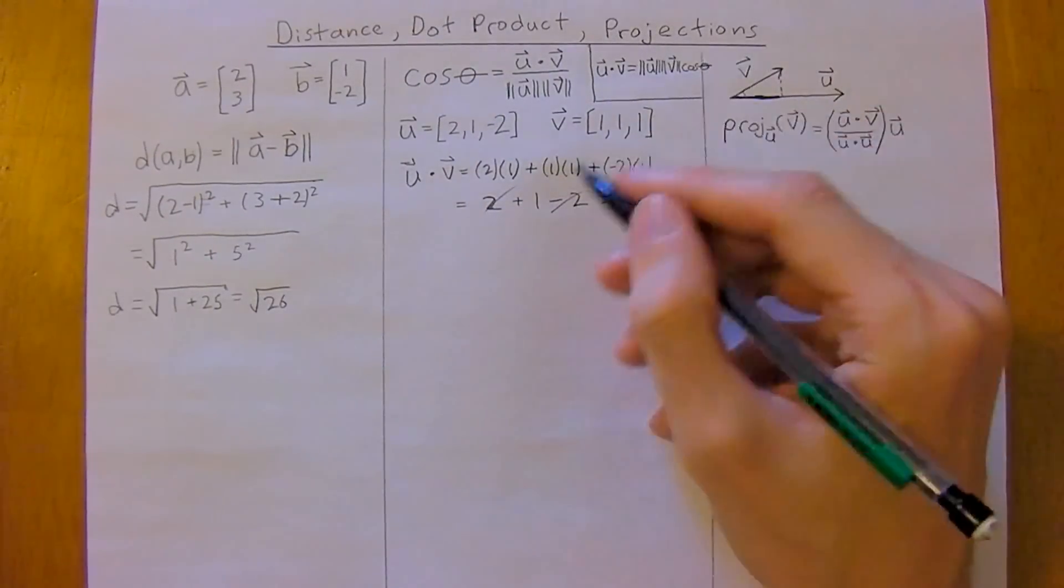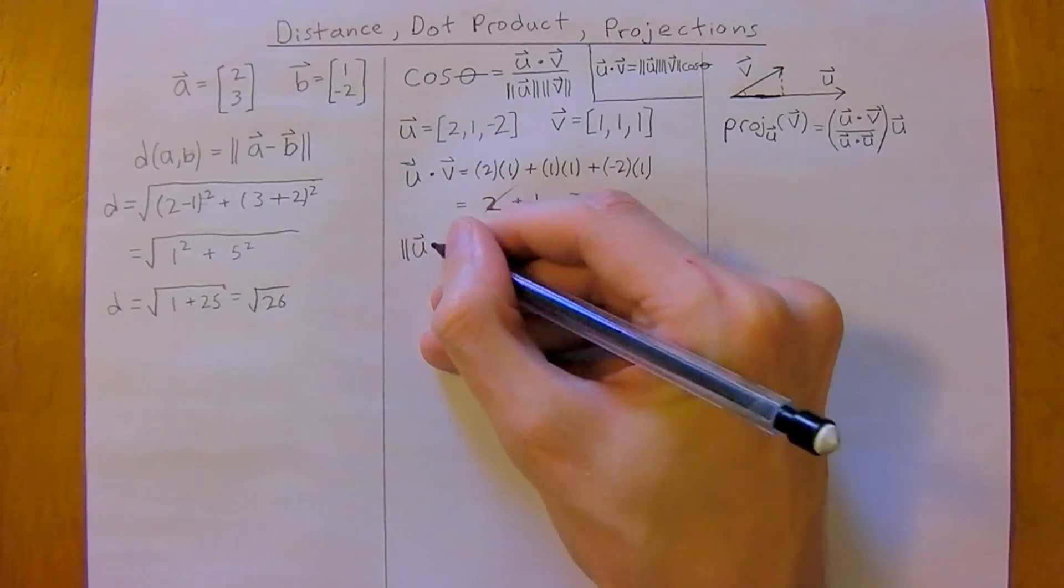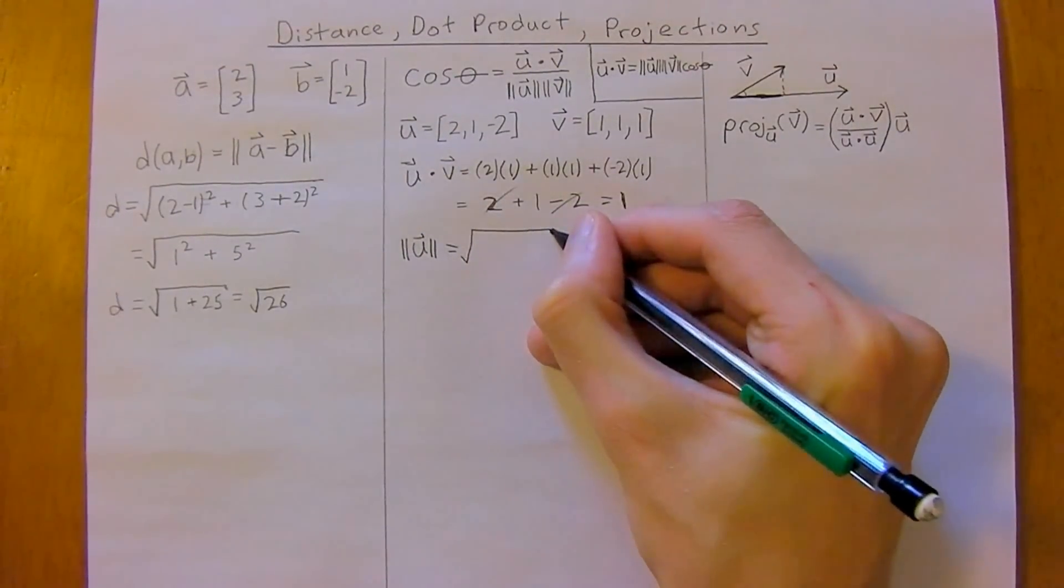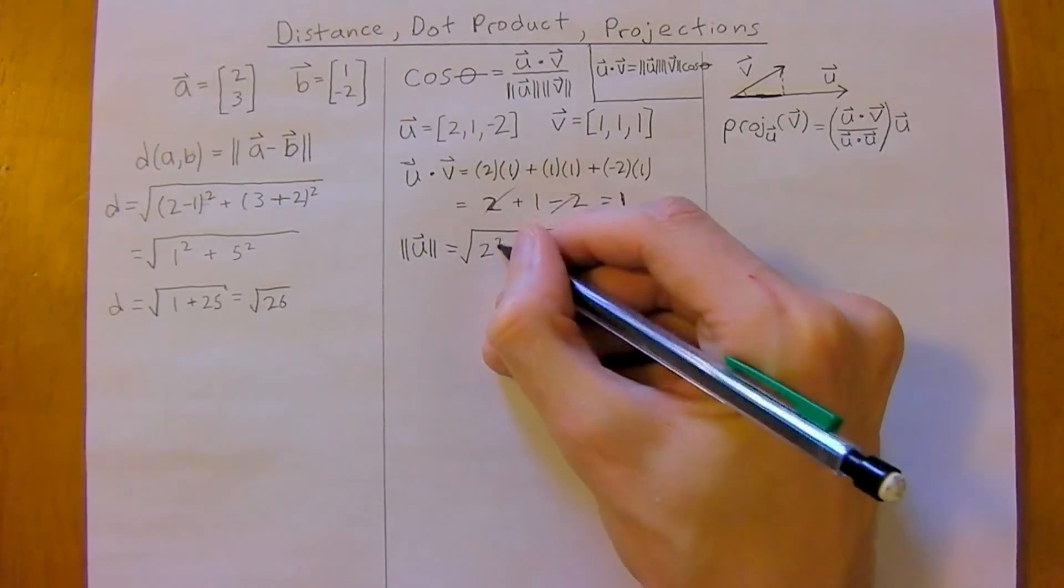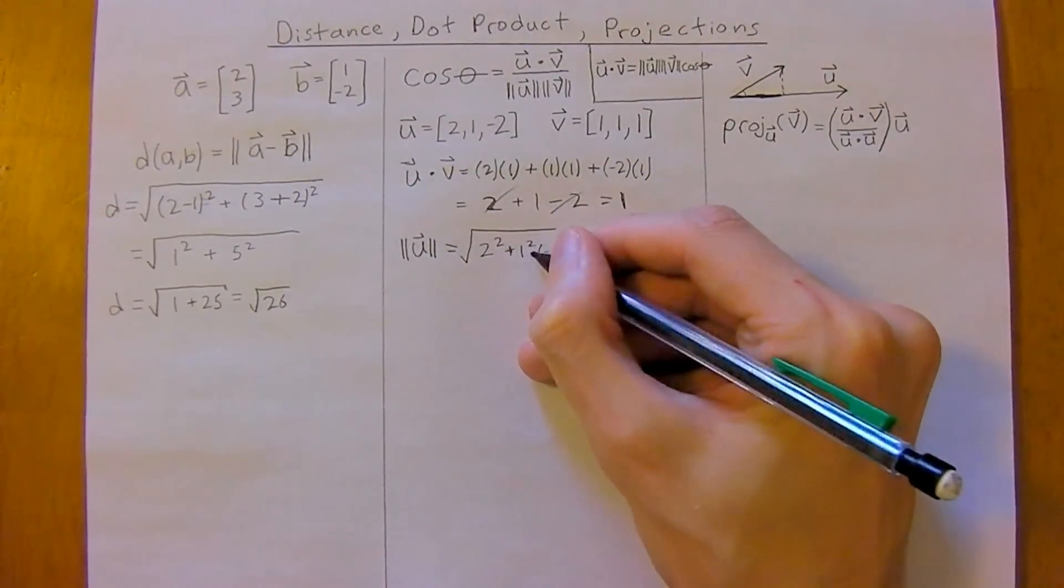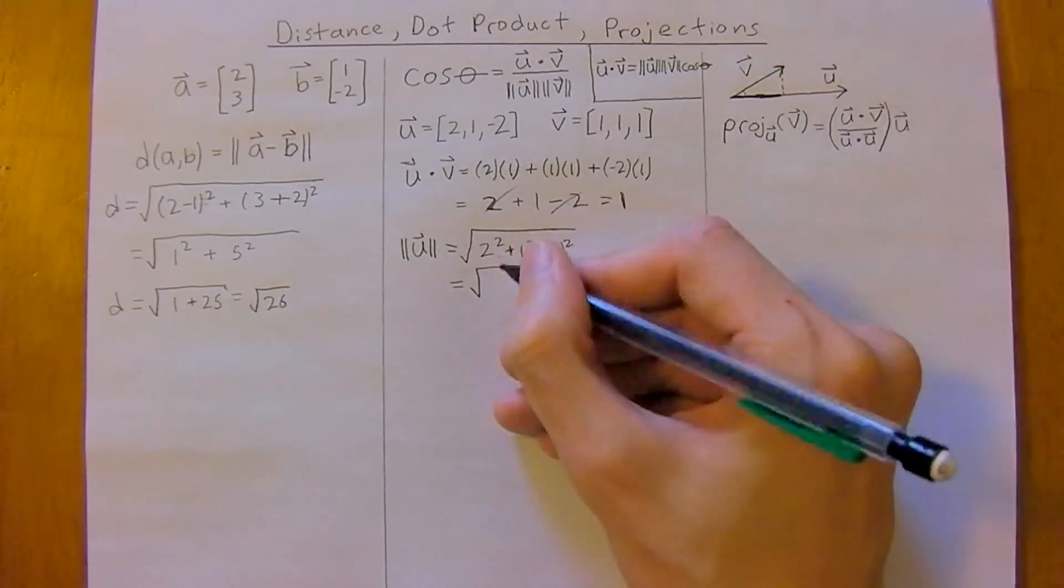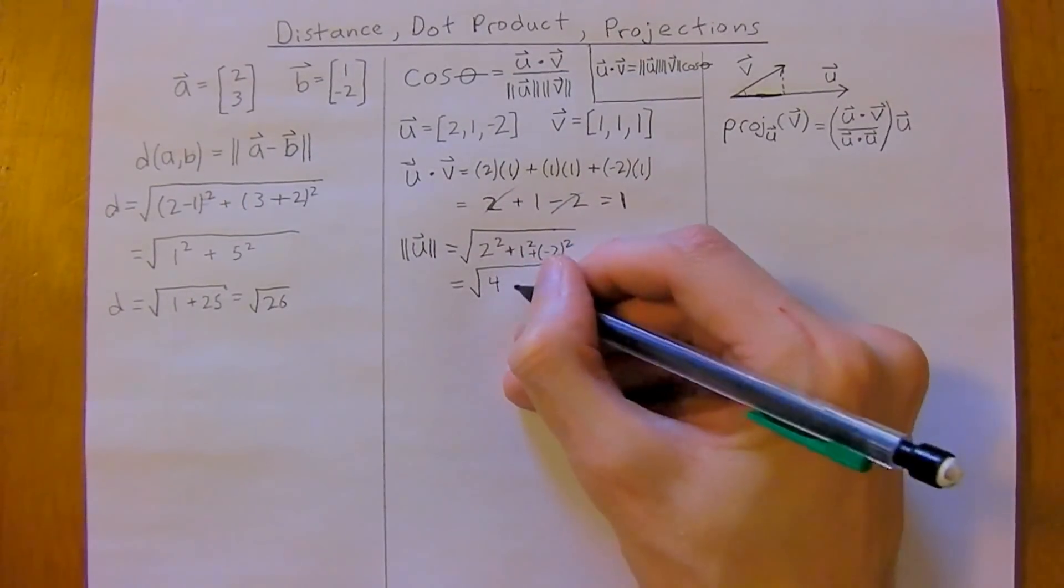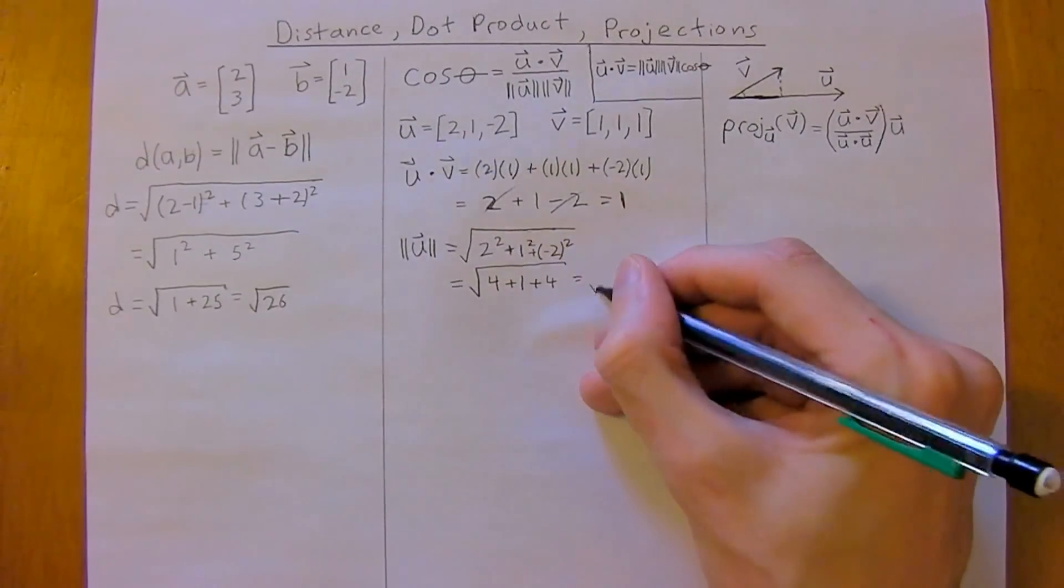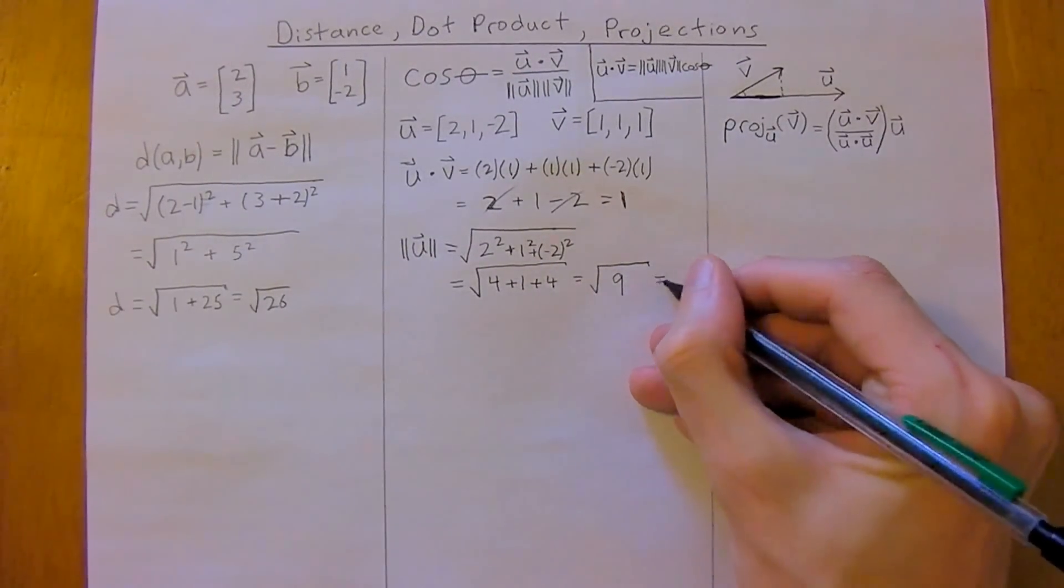Then we need to get the magnitude of U now, so the magnitude or length or displacement of U is equal to Pythagoras theorem again, so 2 squared plus 1 squared plus negative 2 squared, so that is the square root of 4 plus 1 plus 4, which equals the square root of 9, and the square root of 9 is 3.